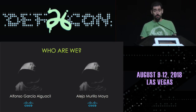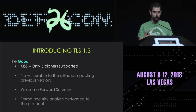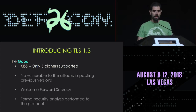So once we have introduced ourselves, let's introduce TLS 1.3. First, a bit of history. Four years ago, a working group was created with a mission to develop the new version of TLS, TLS 1.3. There have been 28 iterations of the protocol specification, and as you can imagine, that has been a long journey.